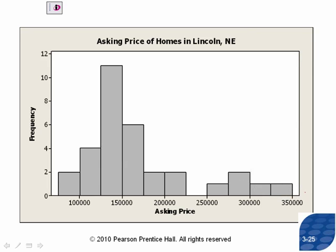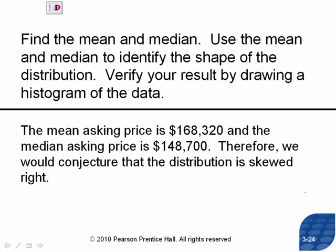This is where you have to be careful with reports. If an average is reported, you can convey two different messages. You could say the average asking price of a home in Lincoln, Nebraska is $168,000 — great if you're trying to pump up the housing market. Or you could say the average price is $148,000 — and you'd both be right. So if you hear 'average asking price of a home,' you need to be skeptical because you don't know which they're talking about. The media is getting better — with housing prices and incomes they typically report medians, because both variables are highly skewed to the right.